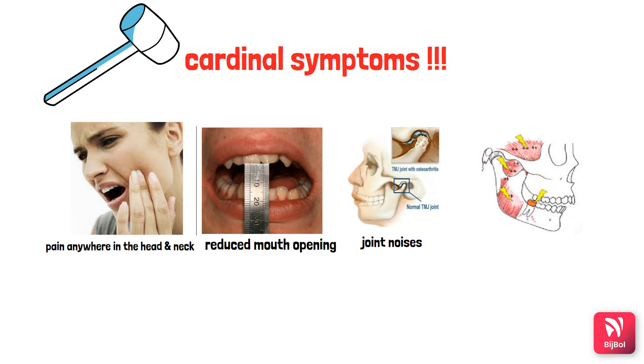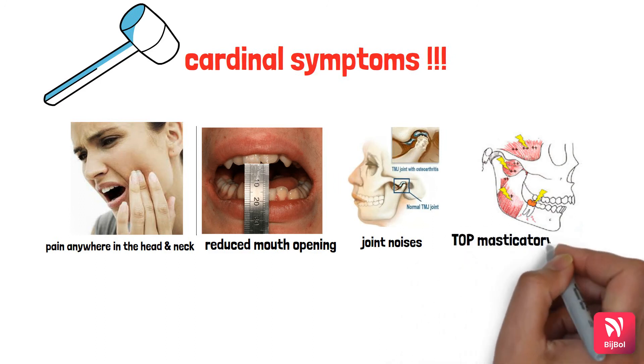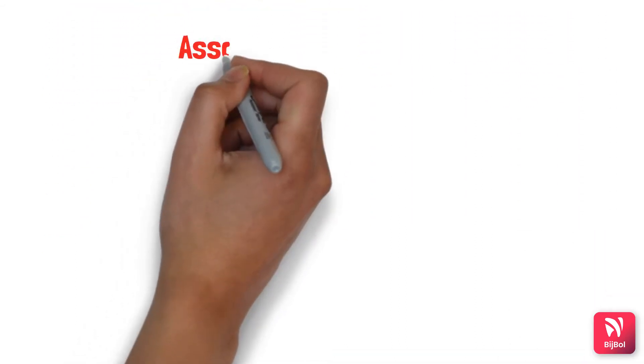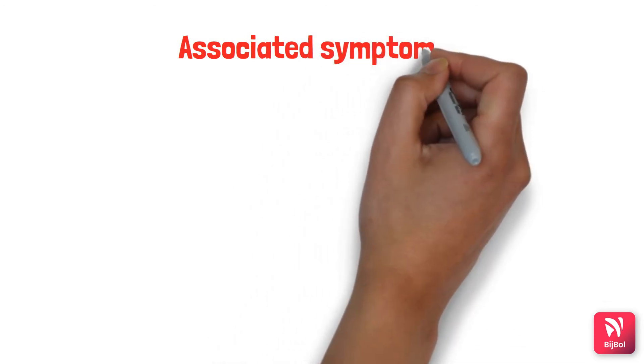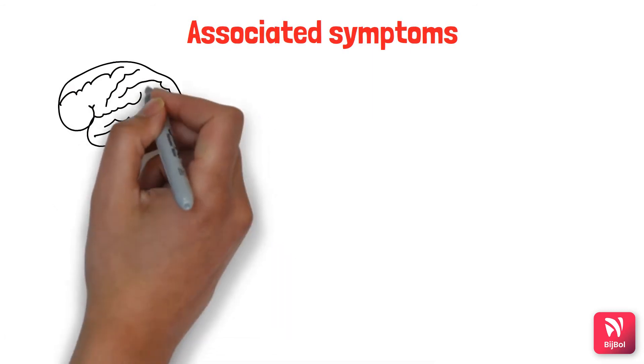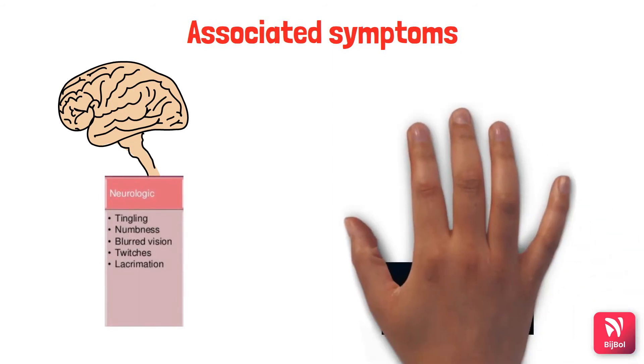Finally, tenderness upon palpation of the masticatory muscles. These four are the cardinal symptoms of MPDS. Associated symptoms are not related to the head and neck region but patients may have them. First, neurological manifestations including tingling, numbness, blurred vision, twitches, and lacrimation.